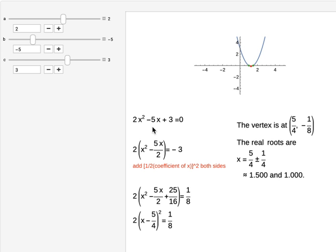This is the method illustrating completion of squares. Here we took 2 outside. The x coefficient is 5/2, so (5/2)² = 25/16. I added 25/16 to both sides.